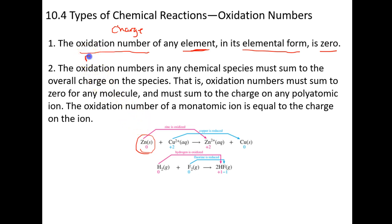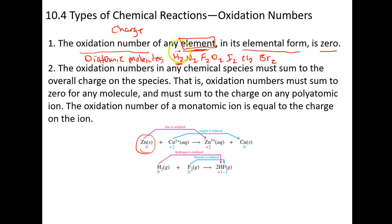Don't forget your diatomic molecules. Remember, it's 'have no fear of ice cold beer.' These seven atoms exist in the elemental state as diatomics. So the element of hydrogen is H₂, not H — H₂ has a zero charge. For example, hydrogen plus fluorine: hydrogen has a zero charge, fluorine has a zero charge, and they form HF, where H now has a plus one and fluorine has a minus one.